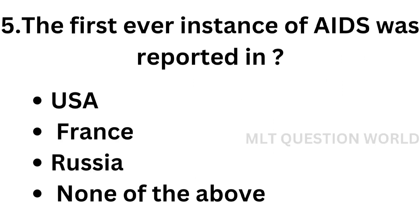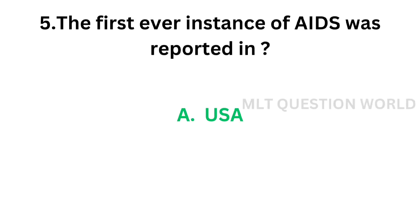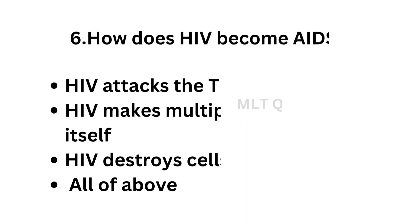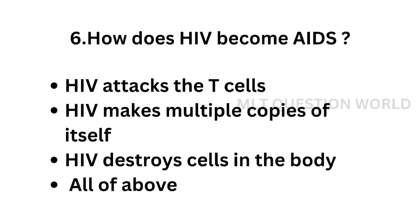Question number 5: The first ever instance of AIDS was reported in — option A, USA; option B, France; option C, Russia; option D, none of the above. The correct answer is option A, USA. The first ever instance of AIDS was reported in the USA, but the first case identified was in Congo, in North Africa.